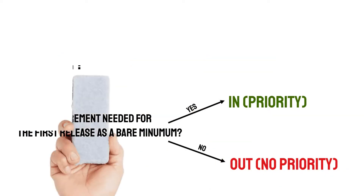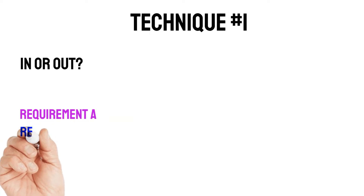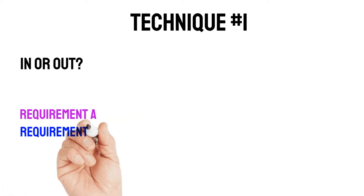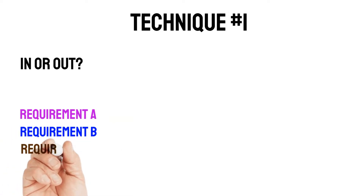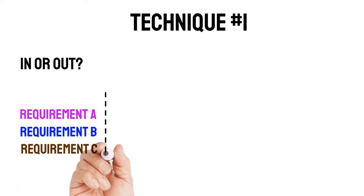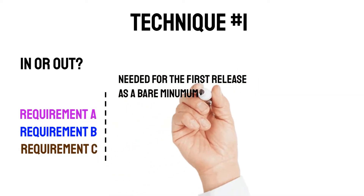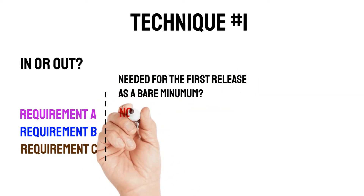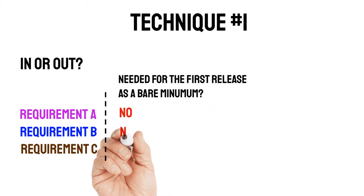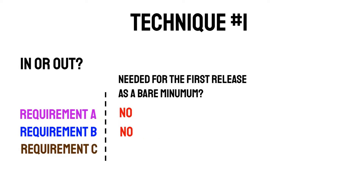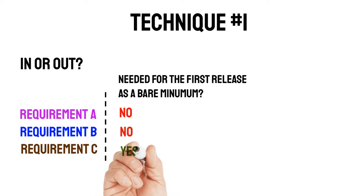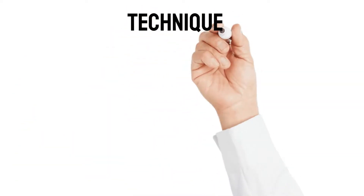Let me give an example with the In or Out technique. Let's imagine we have requirements A, B, and C. We ask ourselves: is this requirement needed as a bare minimum? If the answer is no, then the requirement is out. If the answer is yes, then it's in. In this case, requirement C would be in and the other two would be out.